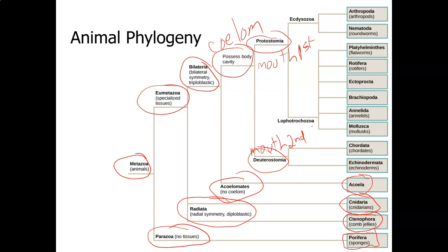The protostomes then evolved into the ecdysozoans and the lophotrochozoans. The ecdysozoans shed their exoskeletons, and they include arthropods and nematodes, like the insects and the roundworms. And the lophotrochozoans include the protostomes that do not shed their exoskeleton. And that would be the flatworms, like tapeworms, the rotifers, the ectoprocta, the brachiopoda, the annelids, which are your segmented worms, and then the mollusks, like your octopus.